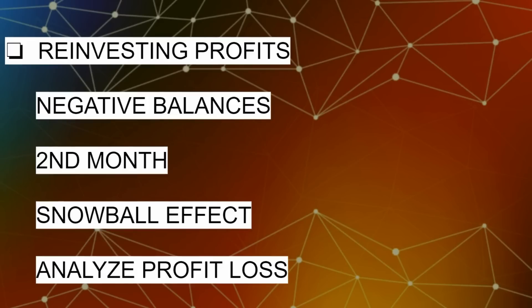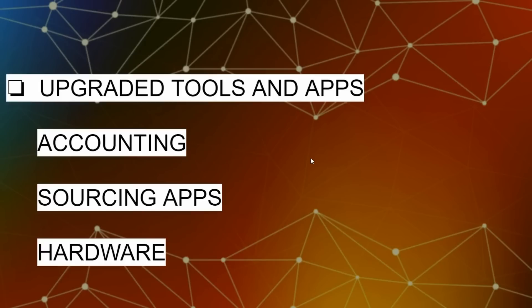Once you're getting positive payouts, concentrate on the snowball effect. Take those payouts and buy more inventory — do not take a profit yet. Reinvest every bit of payout back into the business to buy more inventory. The more items you have in inventory, the more you can sell, the more money you generate, and the greater the snowball effect. Also analyze your profit and loss — identify products where you're losing money and address those by your second or third month.